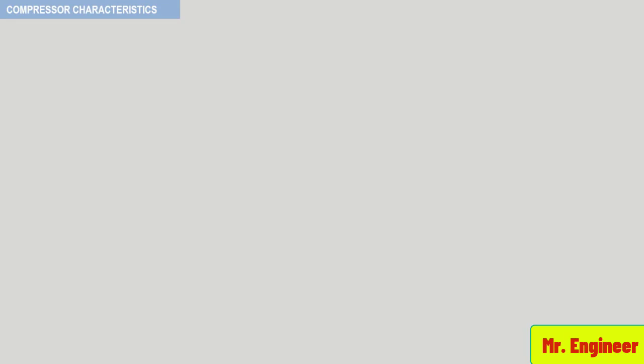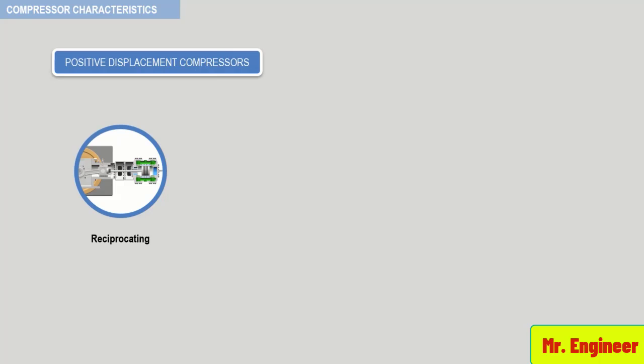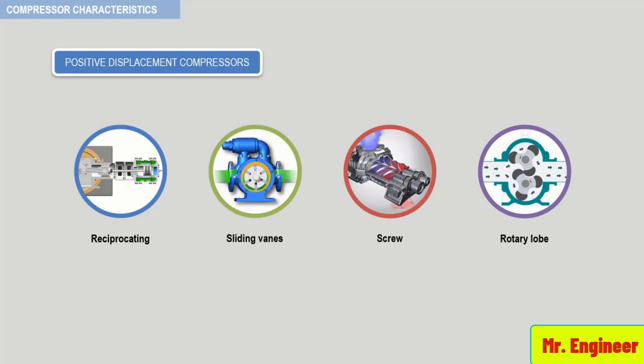If you recall, we saw in a previous video that positive displacement compressors include reciprocating, sliding vanes, screw, and rotary lobe compressors.